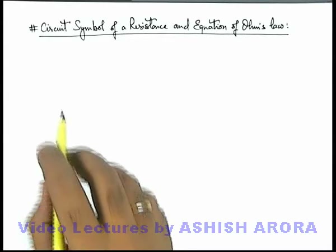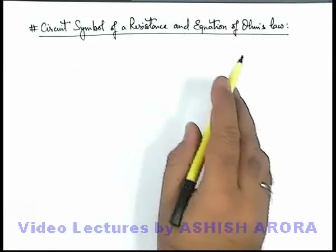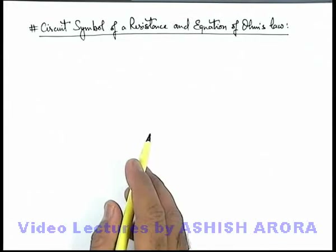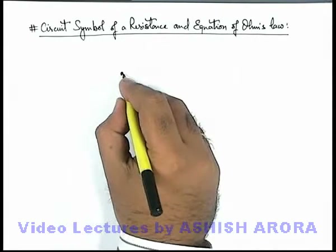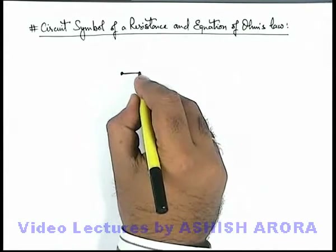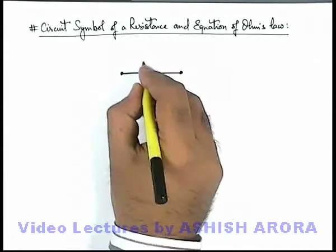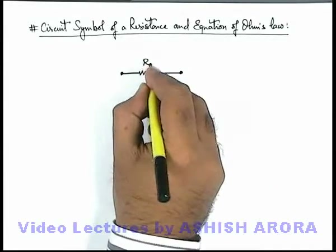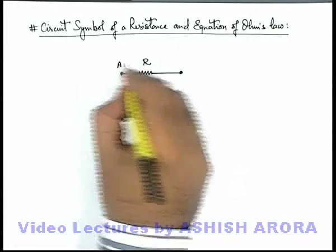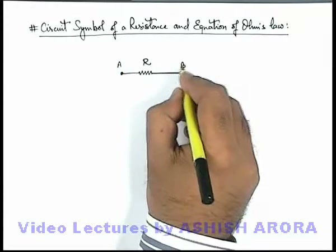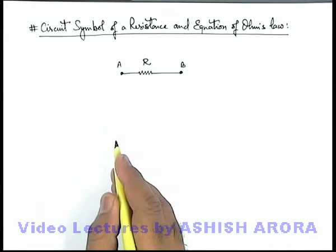Let us discuss the circuit symbol of a resistance and the equation of Ohm's law. In an electrical circuit, resistance is represented by a zig-zag line. Say if there are two terminals A and B, across which a resistance R is connected.